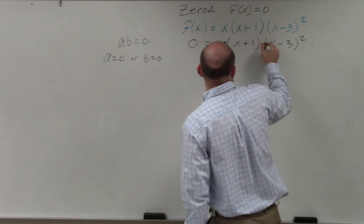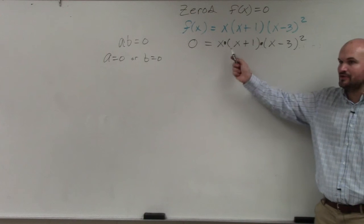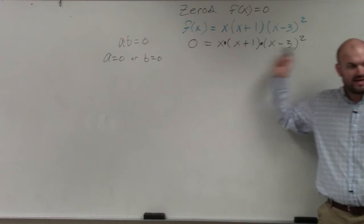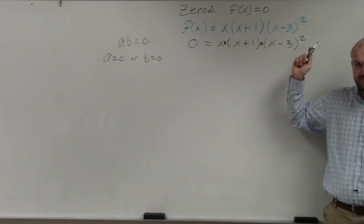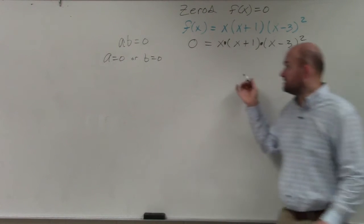We have three expressions that are multiplied. If any one of those expressions is equal to 0, the whole thing is going to be 0. Does everybody agree with me? So we want to figure out what values make any one of these expressions equal to 0.